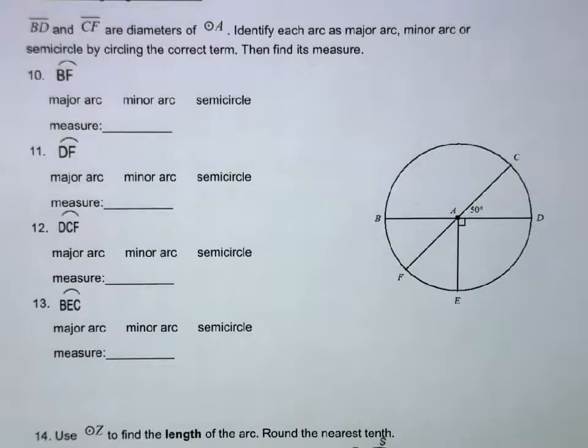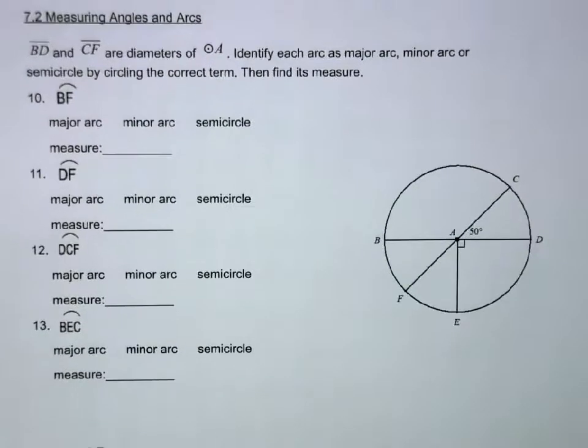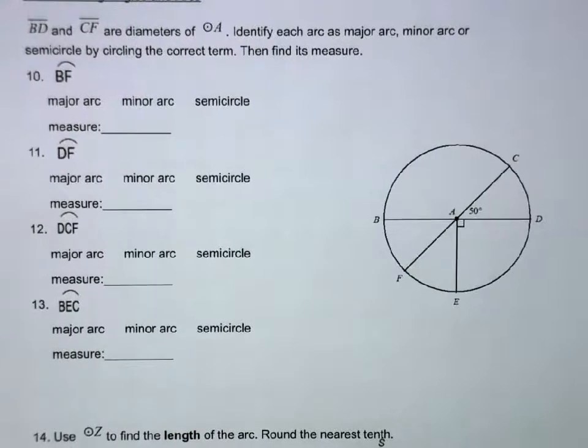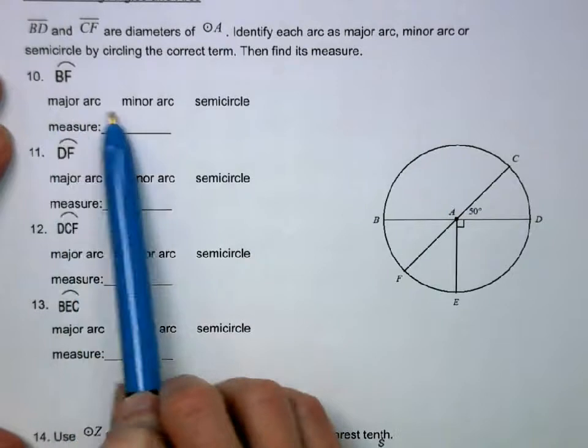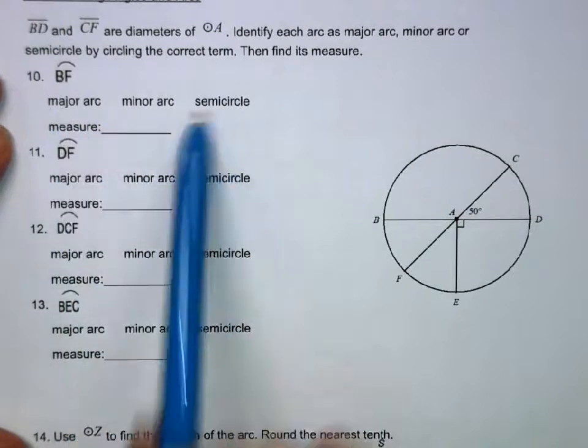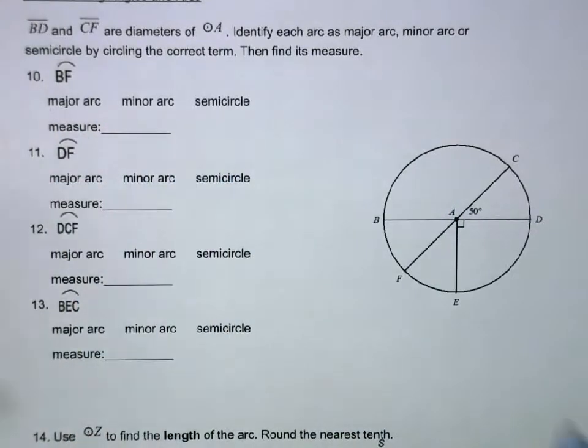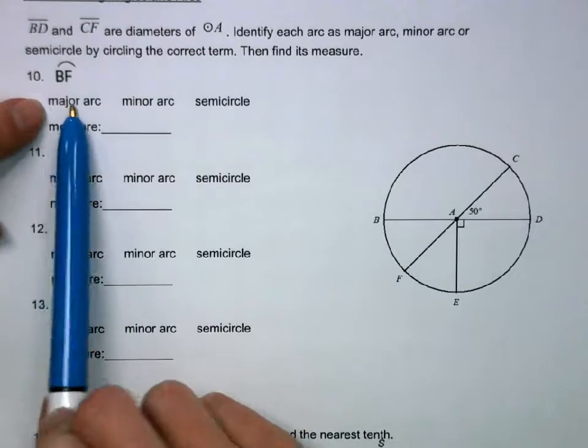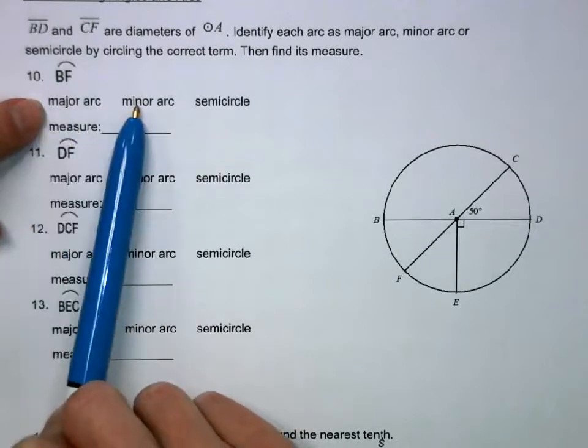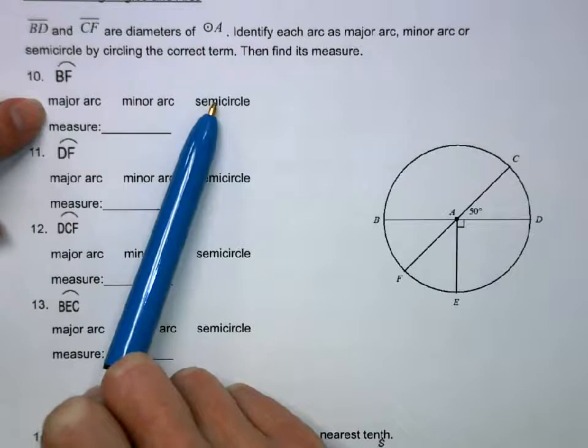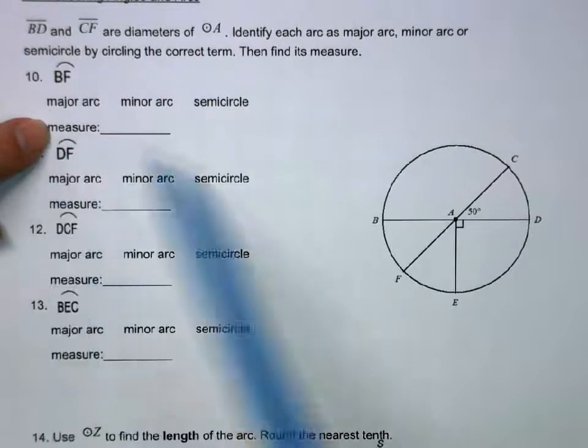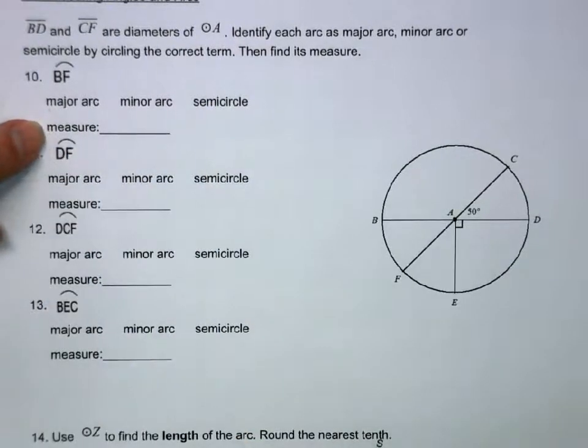Okay, next we have section 7.2, measuring angles and arcs. So what we're going to do in this section is we're going to identify whether the arcs are a major arc, minor arc, or a semicircle, and then find their measure. So a major arc is bigger than 180, a minor arc is less than 180, and a semicircle is equal to 180. The measure is the measure of the central angle.